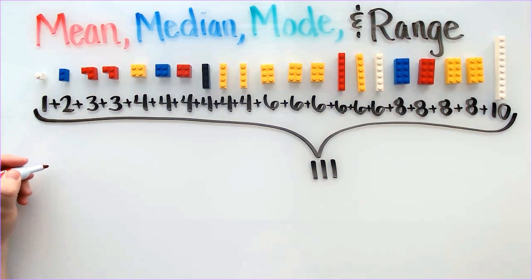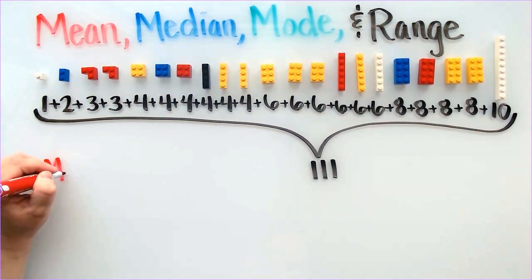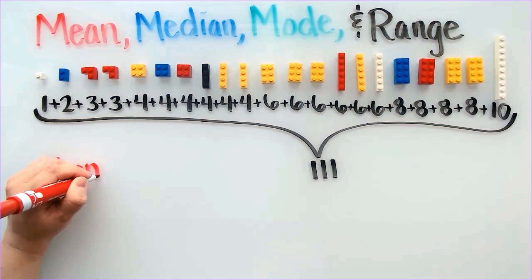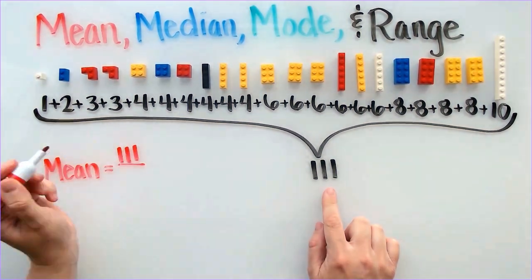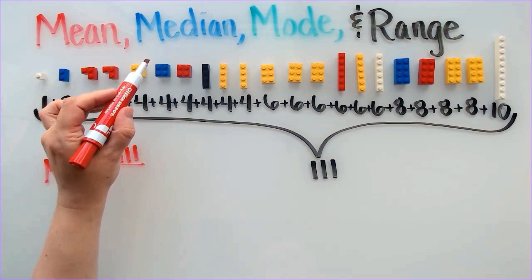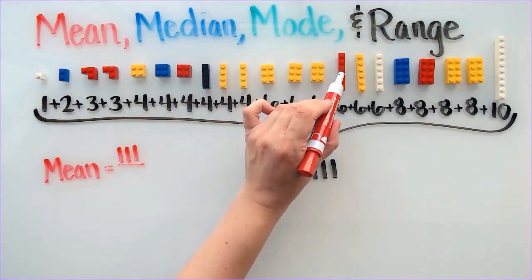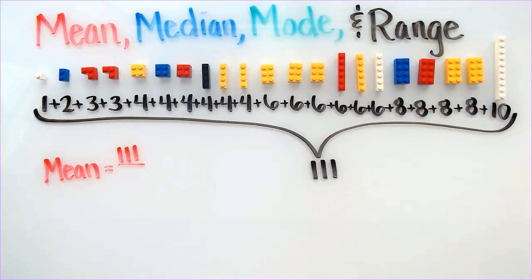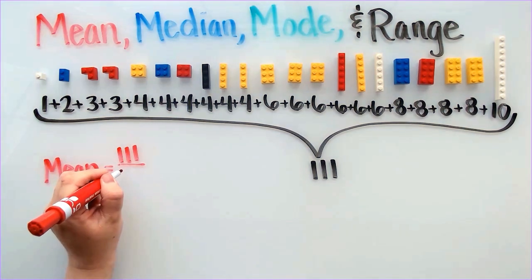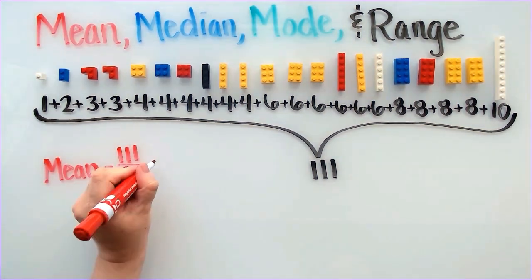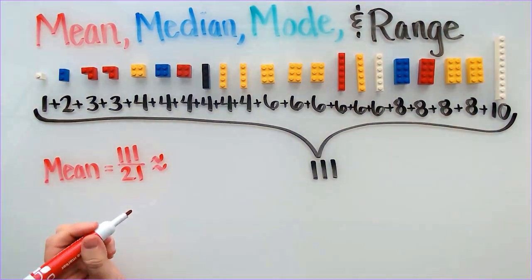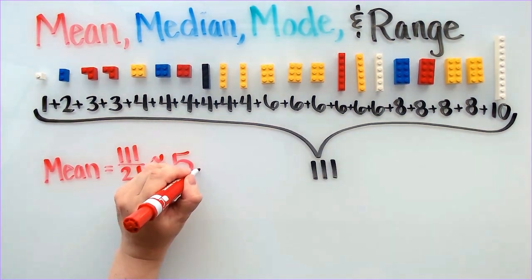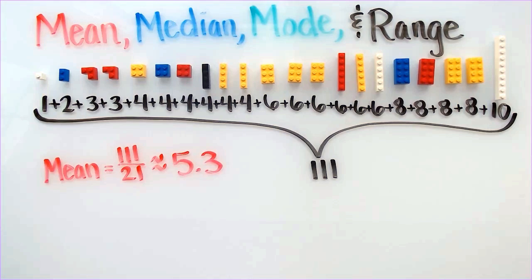Remember that the mean is the average. This means that I will take the total number of studs and divide by the number of Lego pieces. I have 21 Legos. 111 divided by 21 will give me a decimal that rounds to 5.3. This means that the mean is approximately 5.3.